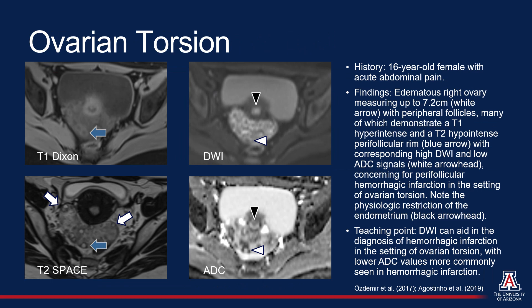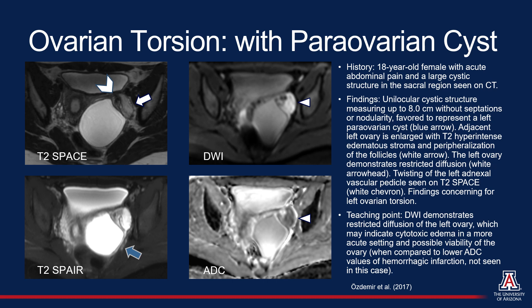Finally, in the case of ovarian torsion, there is research highlighting the utility of DWI and ADC in the evaluation of ovarian viability. In cases such as this one, there are areas of perifollicular restricted diffusion with particularly low ADC values concerning for perifollicular hemorrhagic infarction, a potentially poor prognostic sign. However, in this case, there is restricted diffusion of the left ovary, but the ADC values are not low enough to suggest hemorrhagic infarction. This restricted diffusion may be in the setting of cytotoxic edema produced by premorbid cells in a more acute setting, a finding which may indicate possible viability of the ovary and may significantly impact management.